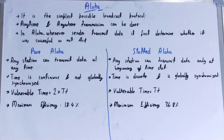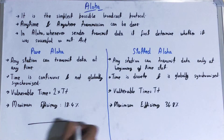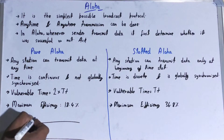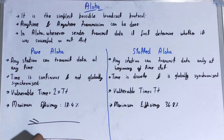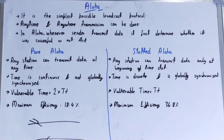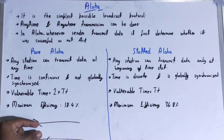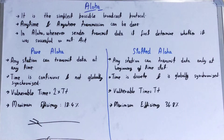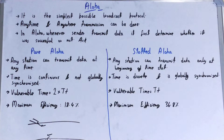In pure ALOHA, any station can transmit data at any time. So if there is a transmission channel and two stations want to send data, they are free to transmit at any time. The problem with pure ALOHA is that it may happen that at the same time more than two stations transmit data simultaneously, so the chances of collision become very high.